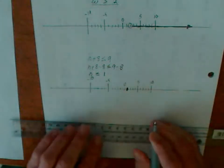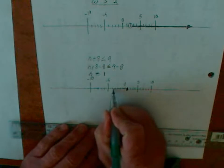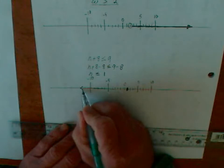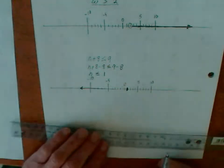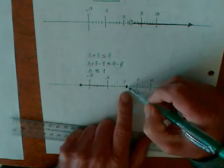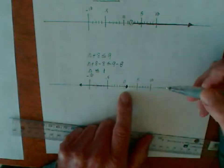And because it's less than, it's going to go all the way to the left. Okay? So this indicates that it does include the number 1 and anything smaller than 1.